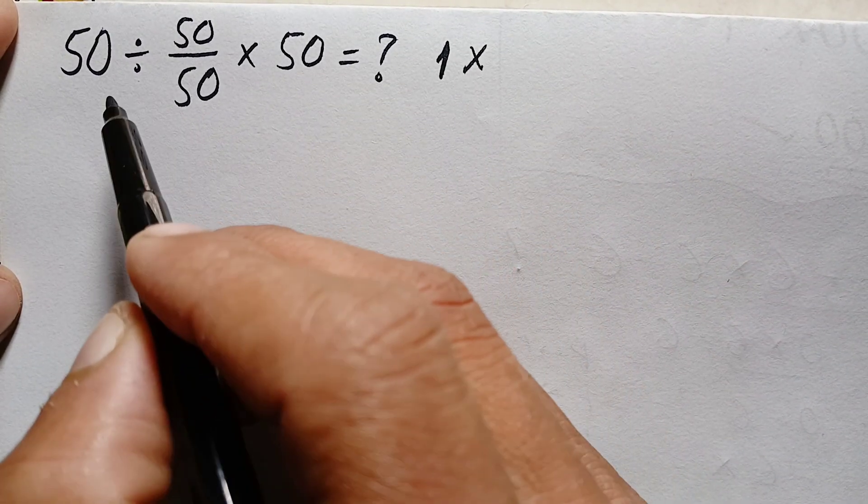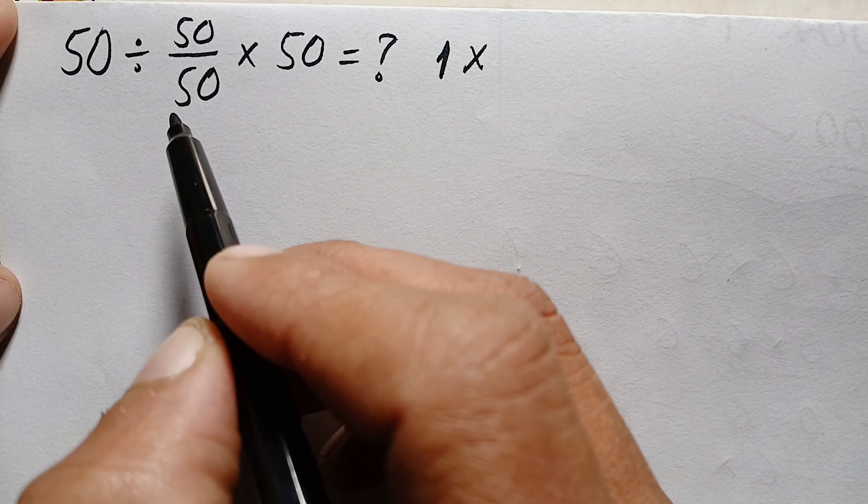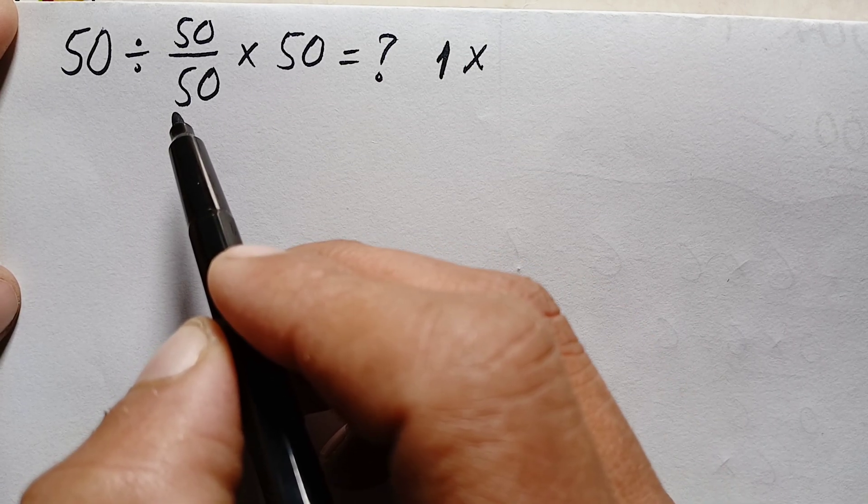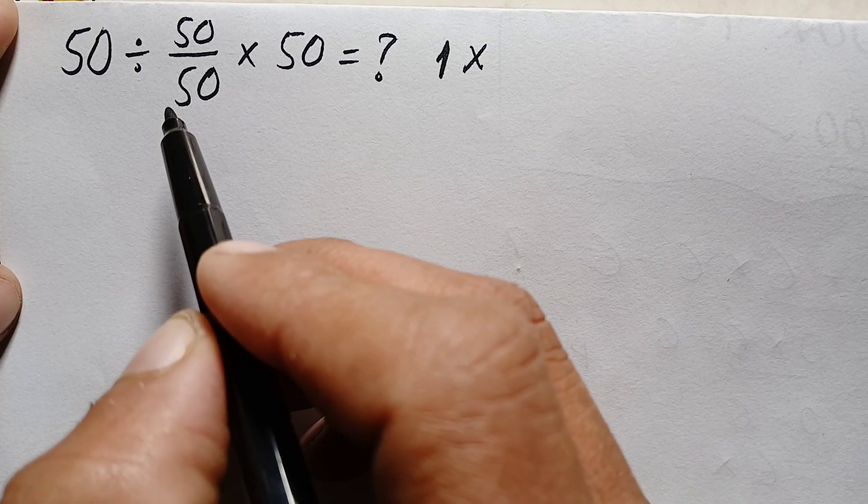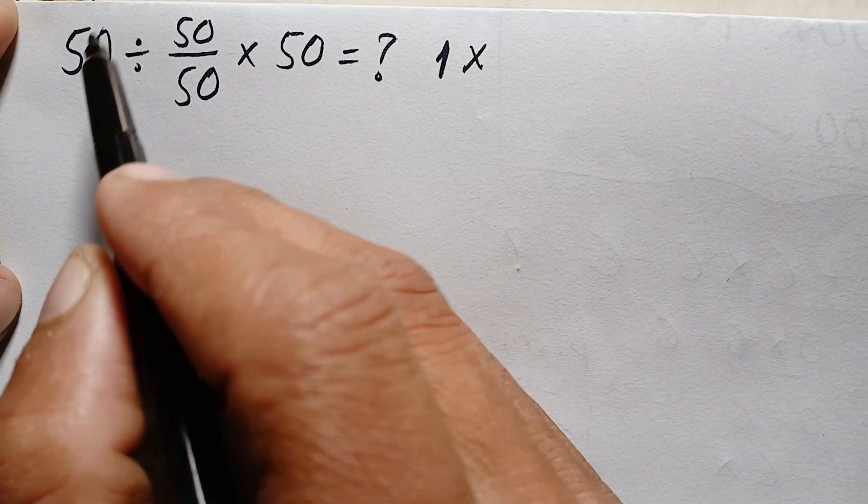Here we have two operations: division and multiplication. According to the order of operations, or PEMDAS rule, if we have two operations of division and multiplication, they have equal priority from left to right. So therefore here we will do this division first.